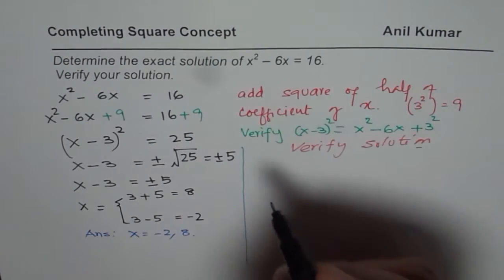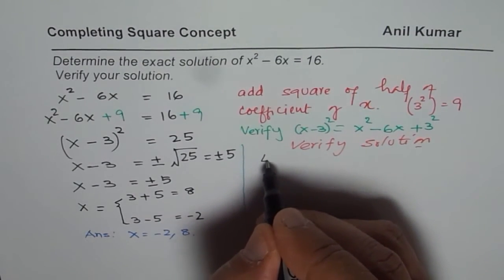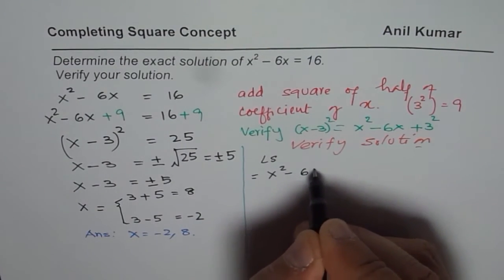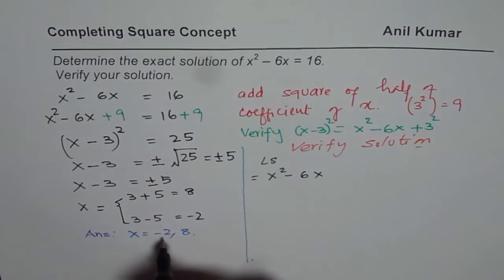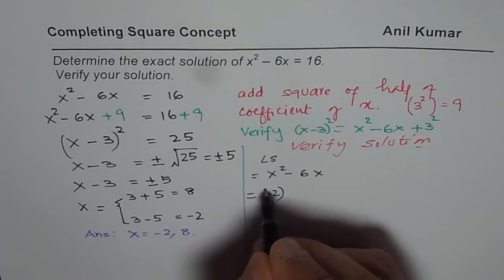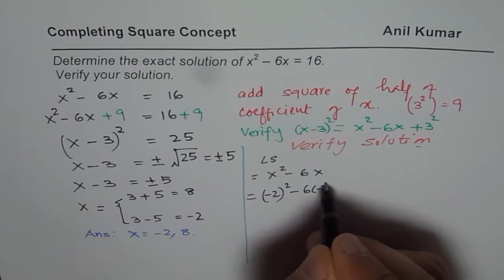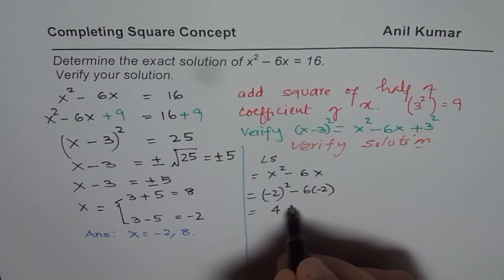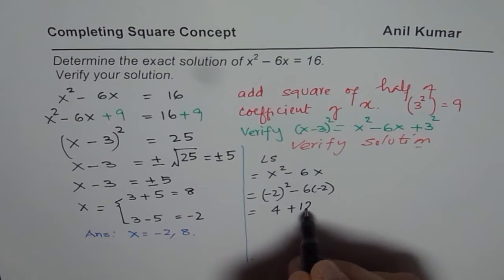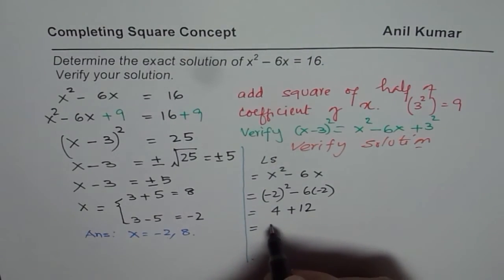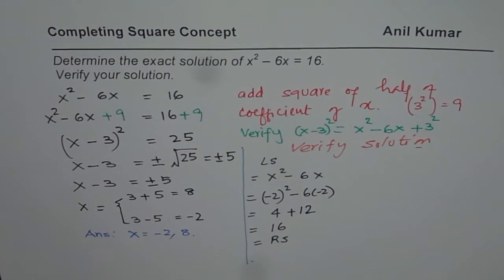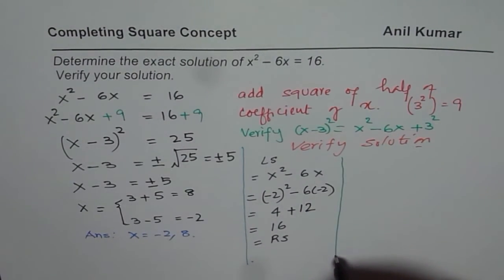Just substitute them on the left side. So, we will start with the left side. Left side is equal to x square minus 6x. Instead of x, I will write minus 2. So, let me begin with minus 2. We have minus 2 square minus 6 times minus 2. And that is what? Minus 2 square is 4. Minus minus becomes plus, I mean plus 12. And 4 plus 12 is indeed 16. That is the right side. So, if left side is equal to right side, that means that the solution is correct.